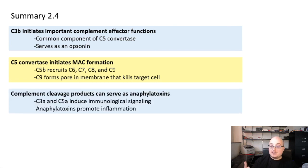Complement cleavage products like C3A and C5A serve as what we call anaphylatoxins, really potent inflammatory signaling molecules. So they induce immunological signaling downstream of G-protein-coupled receptors, and these receptors promote many different inflammatory processes, like activating granulocytes, inducing vasodilation, etc.